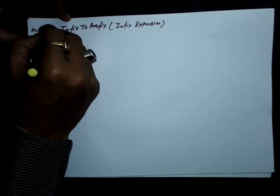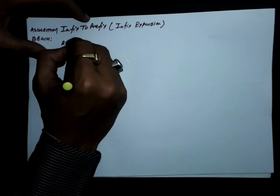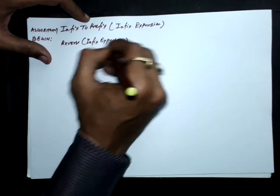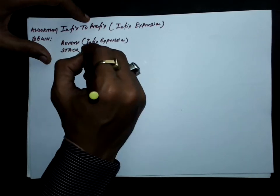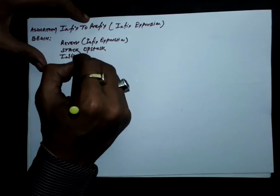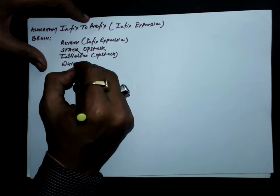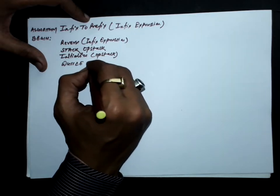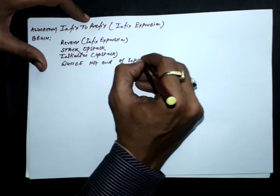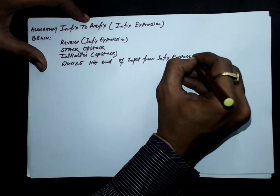Now let's write the algorithm for the same. First, reverse the given infix expression. Then take an operator stack (OP stack) and initialize it so it contains no symbol initially. Continue while there are inputs from the infix expression — while not end of input from infix expression, do the following.